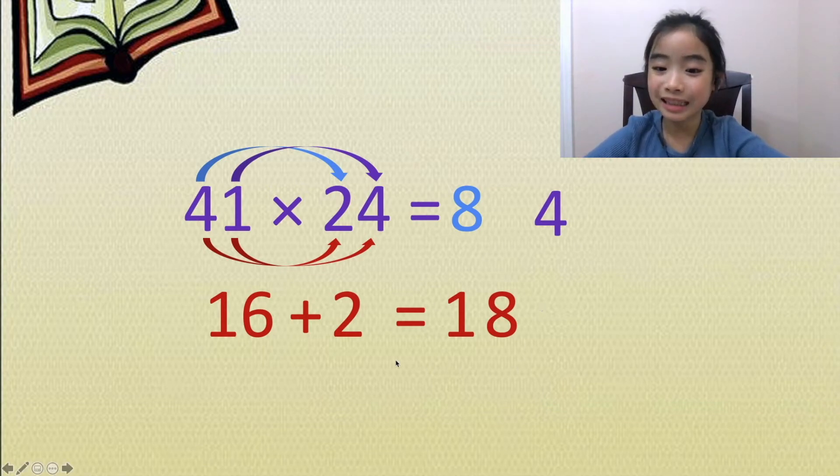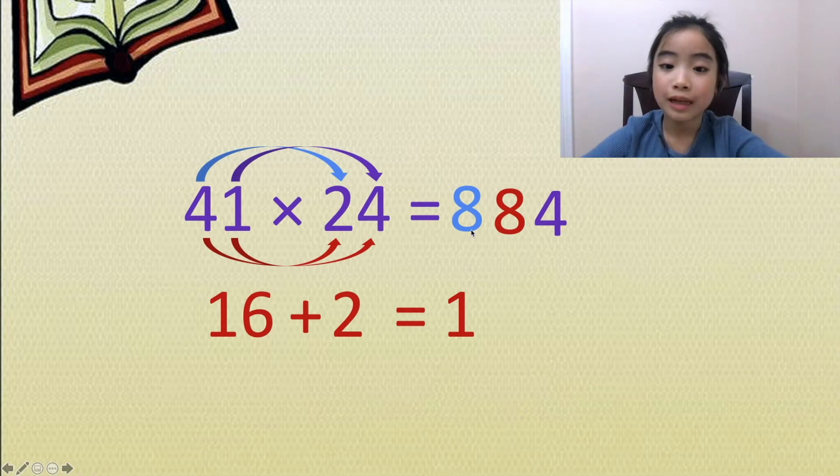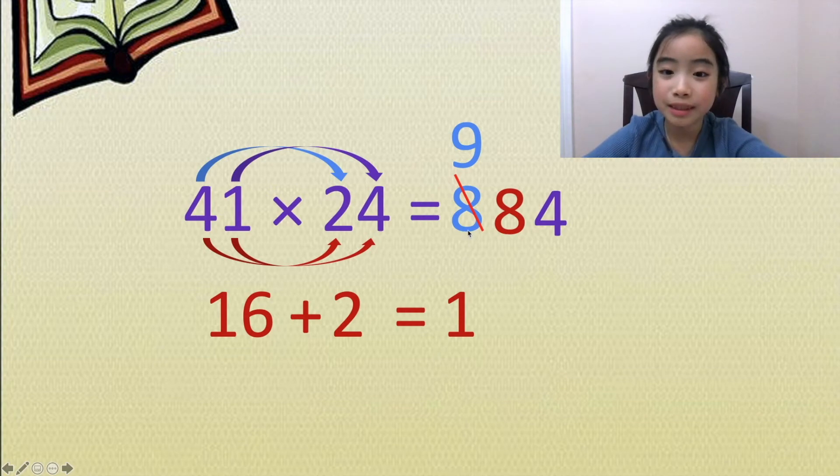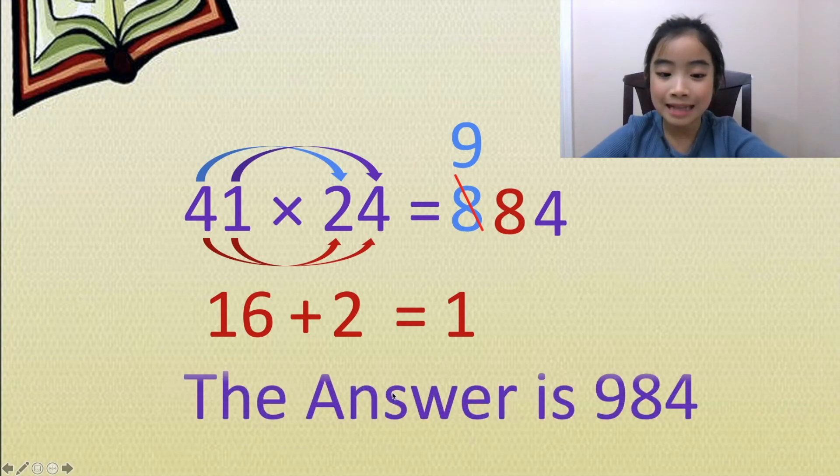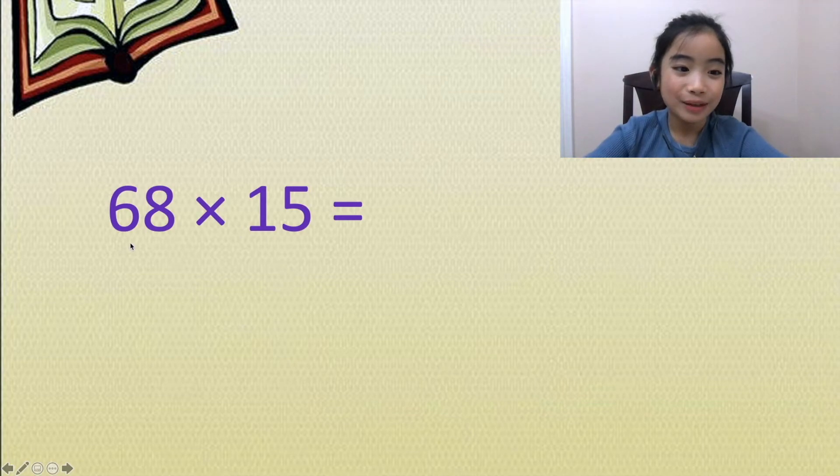Since 18 is bigger than 10, we put the 8 in the middle, and we add the 1 to the hundredth place. So 8 plus 1 equals 9. The answer is 984. Now let's look at the last question. We have 68 times 15.